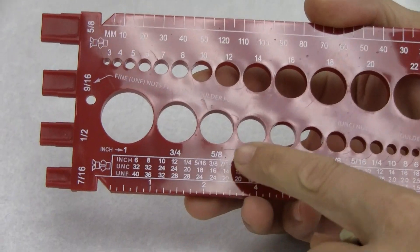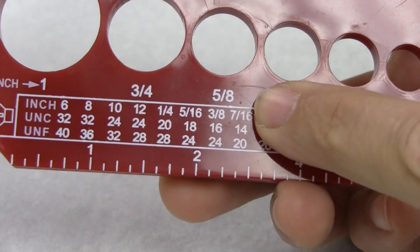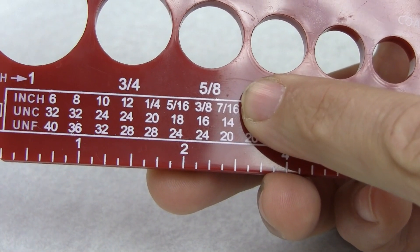Once it's in there, we can pull it out and read the number on the bottom side of the hole. In this case, we have a 5/8 inch diameter cap screw.